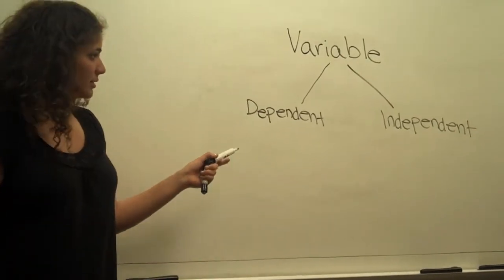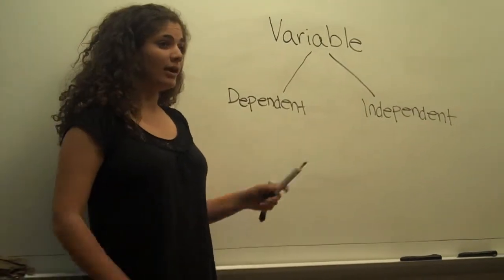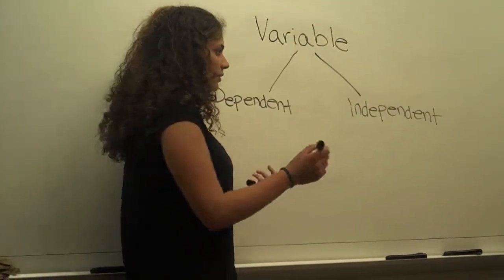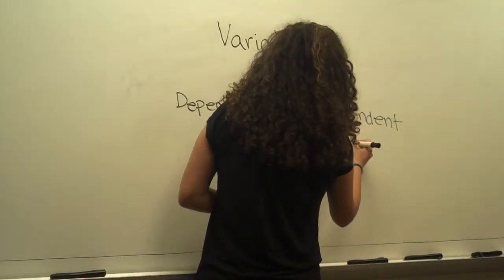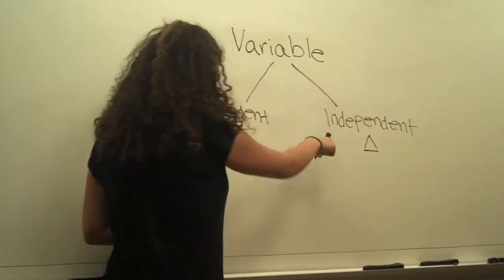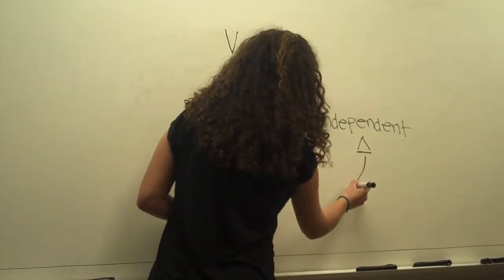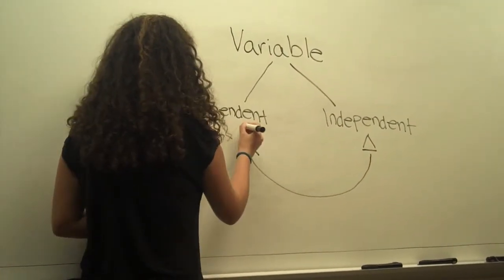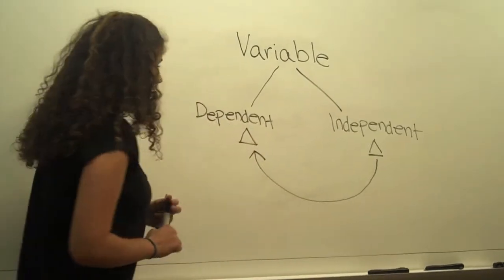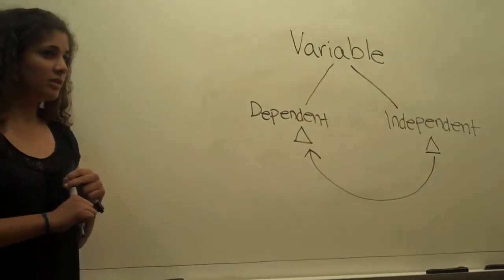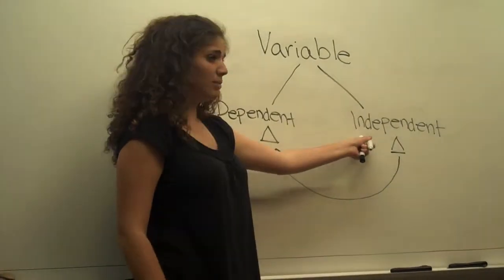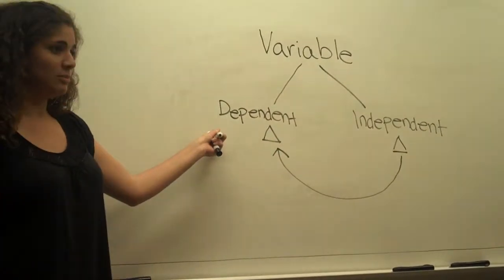Dependent variables are impacted by other variables in the experiment. More specifically, if we change, as a scientist, we change the independent variable, then we would observe a change in the dependent variable. So the big difference here is we can control the independent variable, but we're observing the dependent variable.